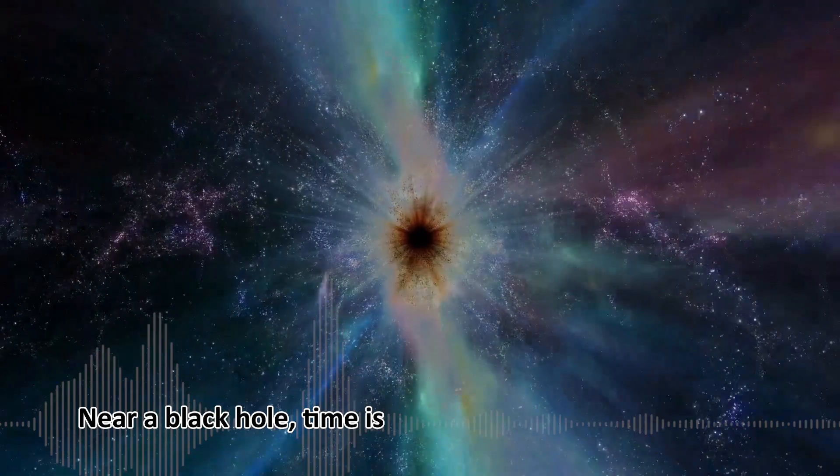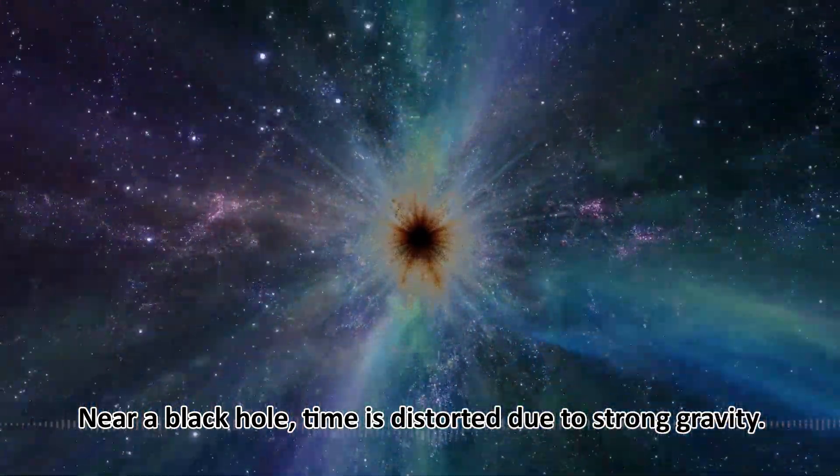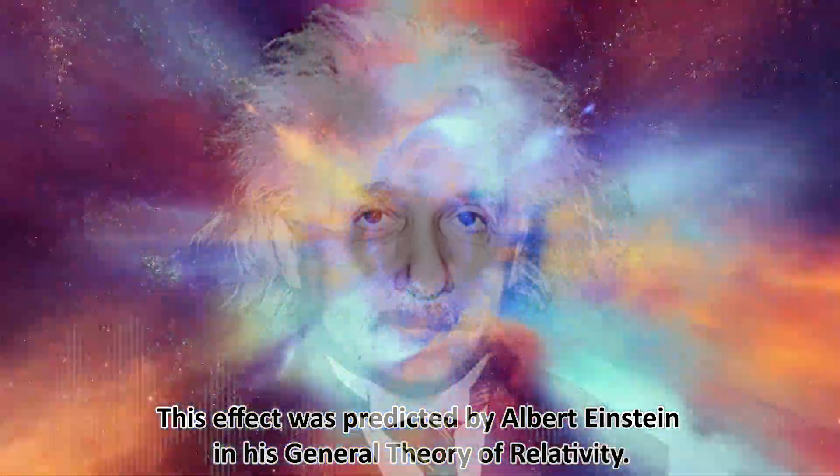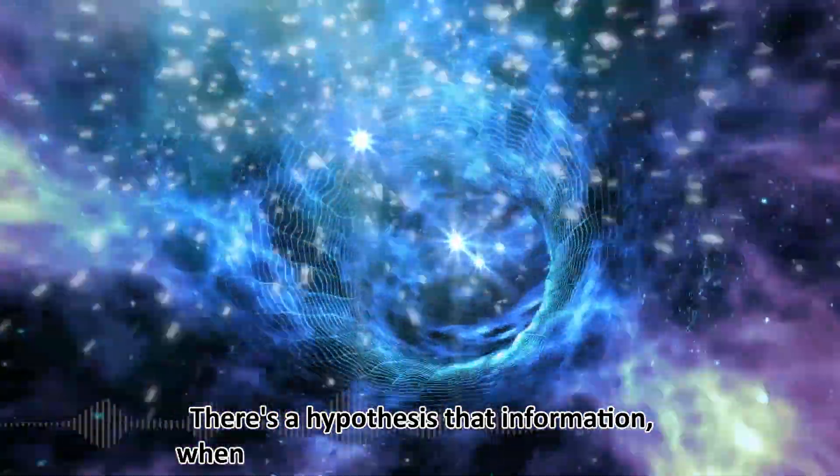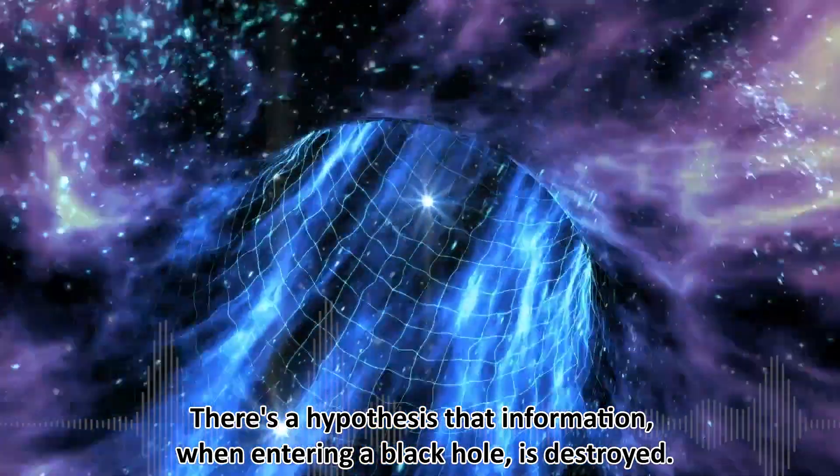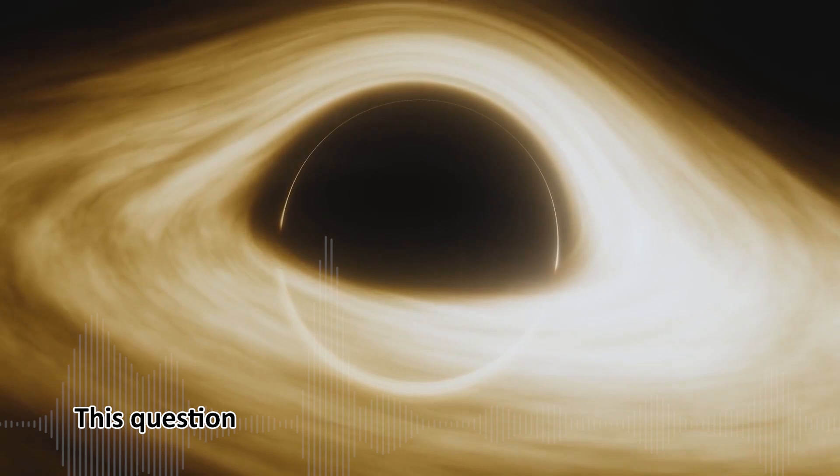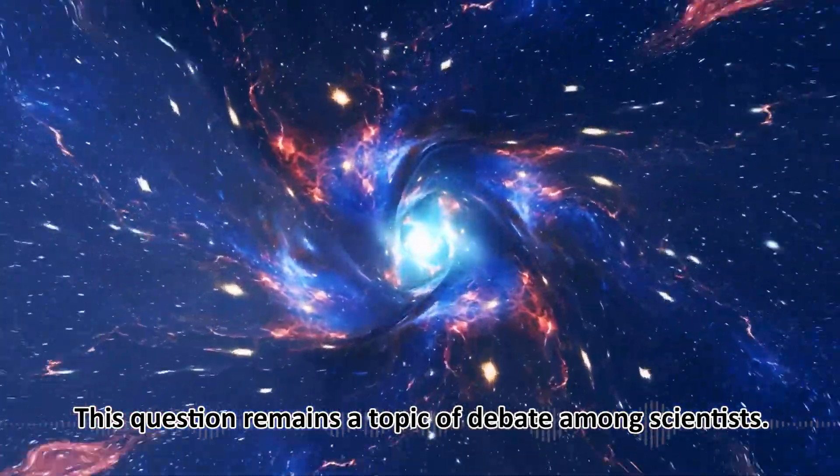Near a black hole, time is distorted due to strong gravity. This effect was predicted by Albert Einstein in his general theory of relativity. There's a hypothesis that information, when entering a black hole, is destroyed. This contradicts the laws of quantum mechanics and remains a topic of debate among scientists.